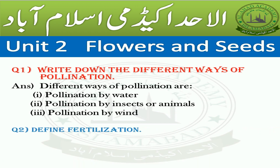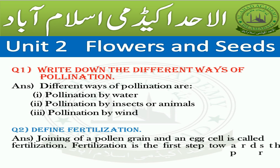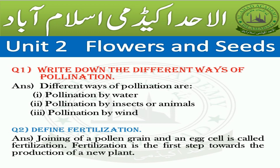Question number two: define fertilization. Answer: joining of a pollen grain and an egg cell is called fertilization. Fertilization is the first step towards the production of a new plant.